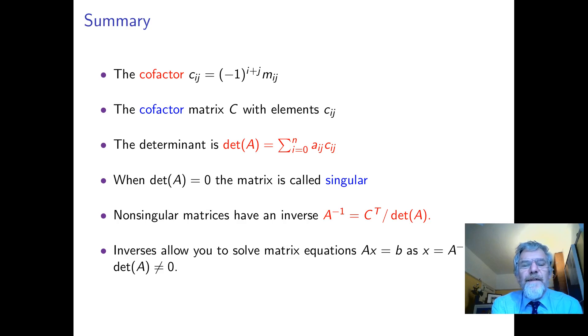So in summary the cofactor is plus or minus the minor with the plus or minus sign going in a pattern like the black and white squares on a chessboard. The cofactor matrix C is a matrix whose elements are the cofactors, so they're the determinants of the minors with the checkerboard plus or minus sign.